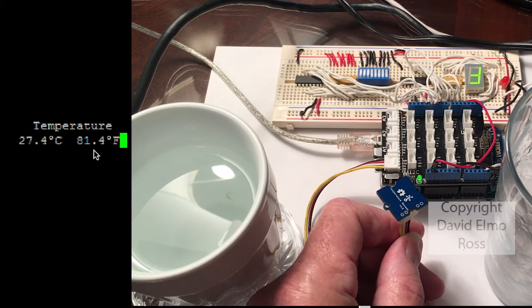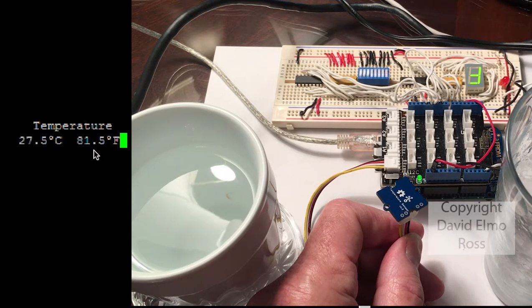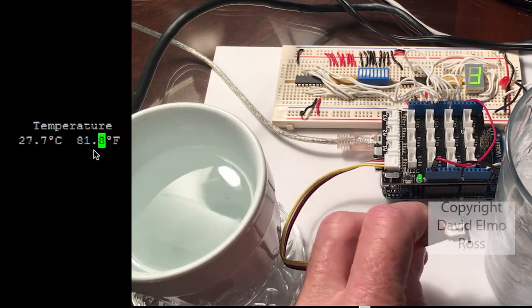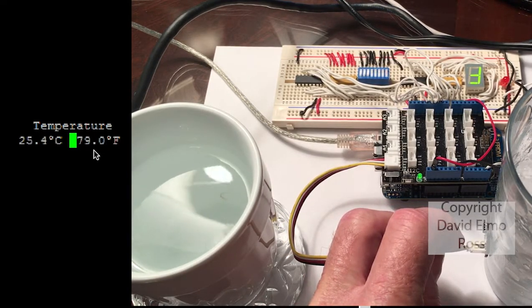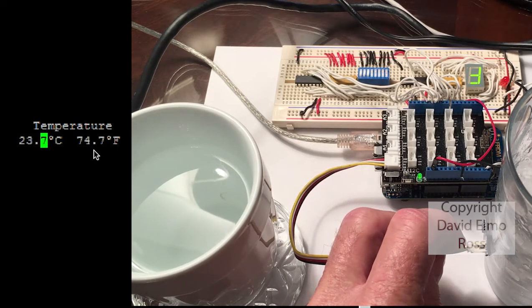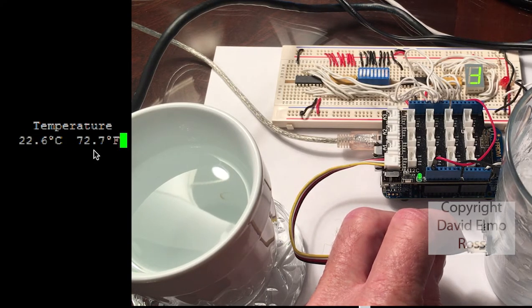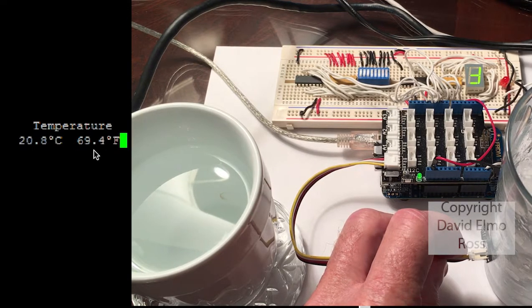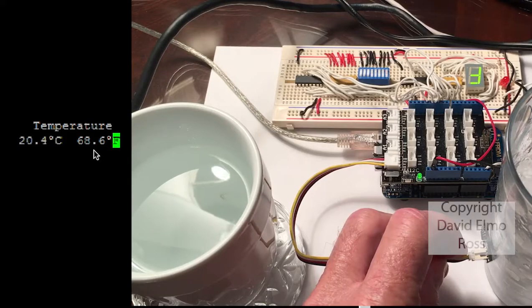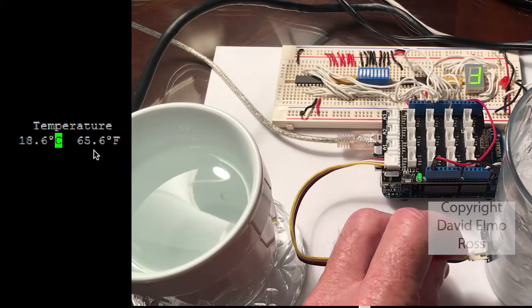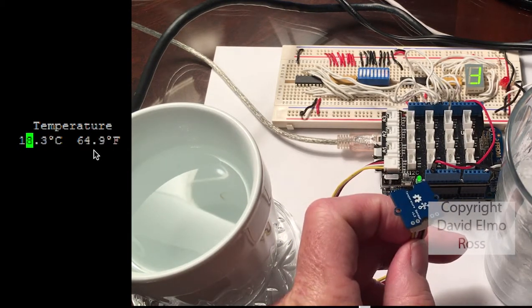But over here what I have is I have ice water and over here I have boiling water. So if I just happen to touch this onto here, just onto the side of the glass, we can see very quickly that our temperature is going to decrease and this is a good way to check to see that your temperature sensor is indeed working without causing it any damage. So as it goes down and down and down it will eventually get down to a temperature close to what the glass is.